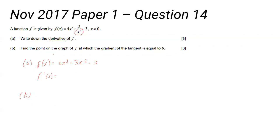Part B says find the point on the graph of f at which the gradient of the tangent is equal to six. Well, this is the gradient of the curve, and the gradient of the curve is the same as the gradient of the tangent. So we need to put f prime x equal to six.